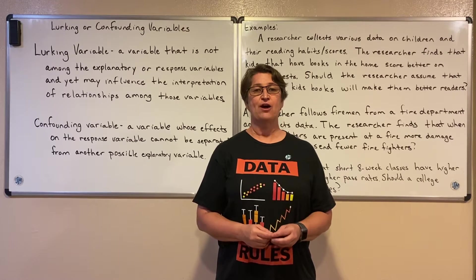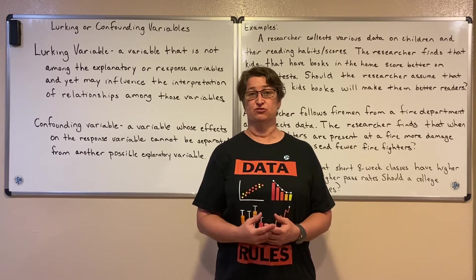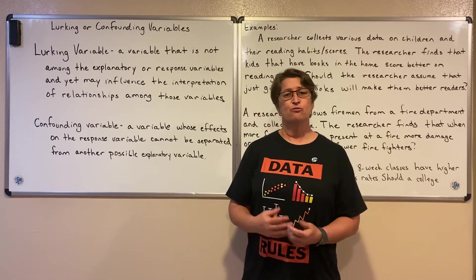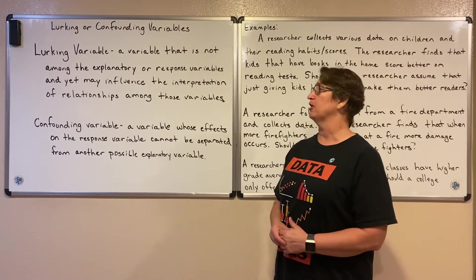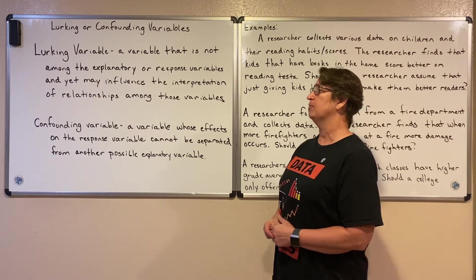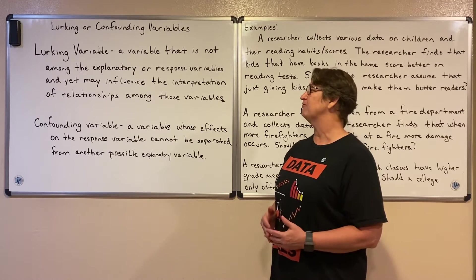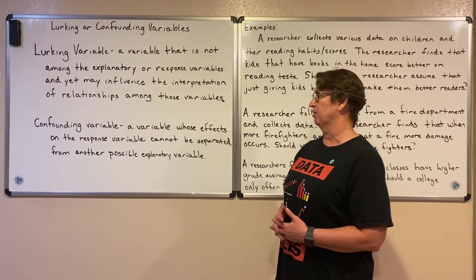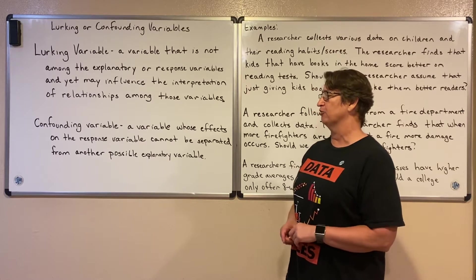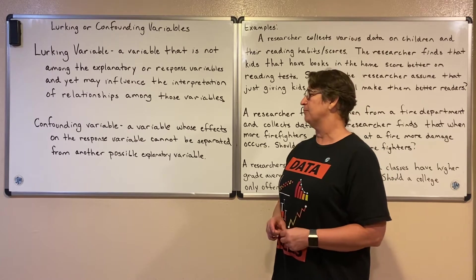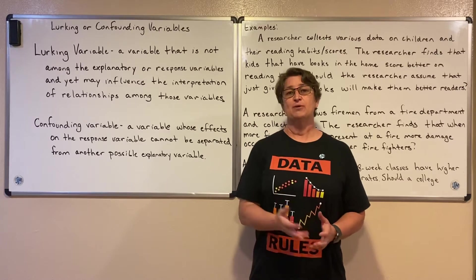A lurking or confounding variable might interfere or influence a statistical study. A lurking variable is a variable that is not among the explanatory or response variables, and yet it may influence the interpretation of relationships among those variables. A confounding variable is a variable whose effects on the response variable cannot be separated from another possible explanatory variable. Let me explain.